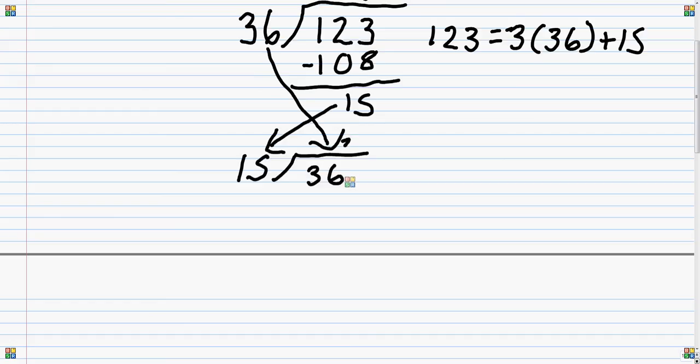This goes into it twice, minus 30, you get 6 left over. And if you want to write it out you can if it is less confusing. 36 is 2 times 15 plus 6, so the remainder is 6.